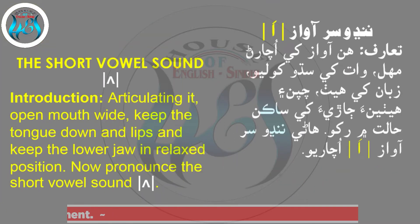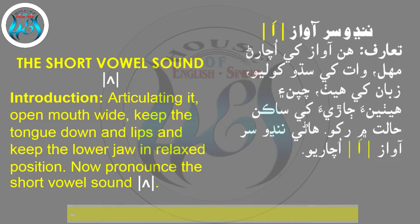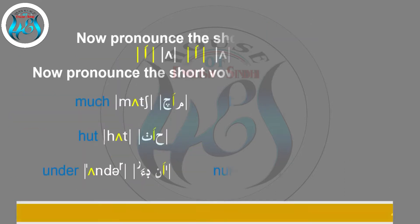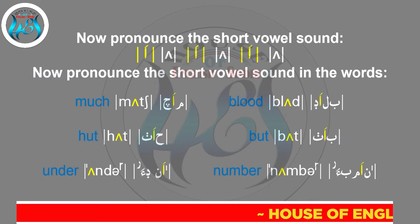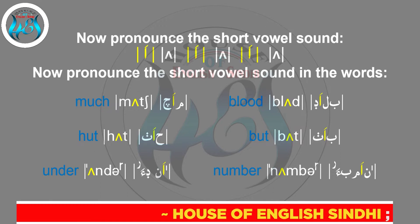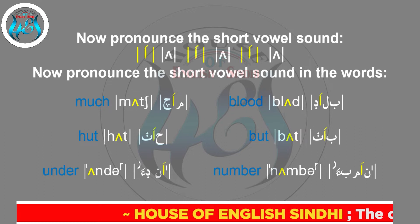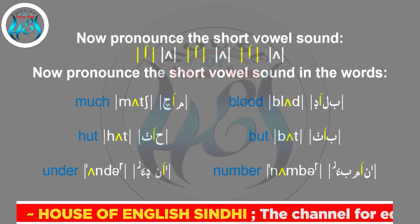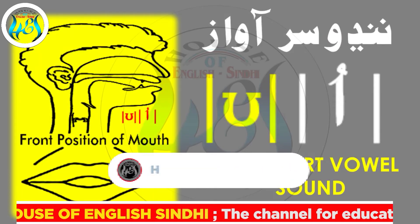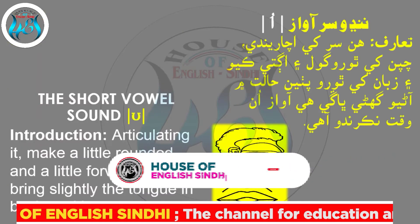The short vowel sound /ʌ/: articulating it, open the mouth wide, keep the tongue down in the lips, and keep the lower jaw in a relaxed position. Now pronounce the short vowel sound. Now pronounce it in the words: Much, Blood, Hut, But, Number.